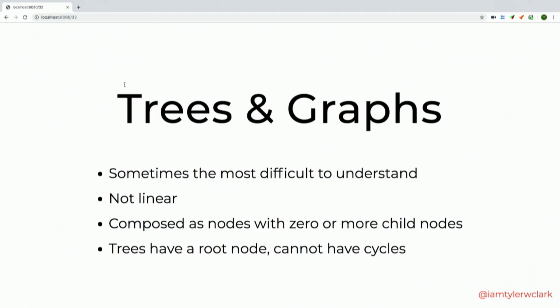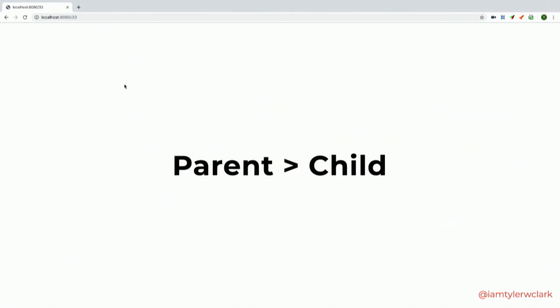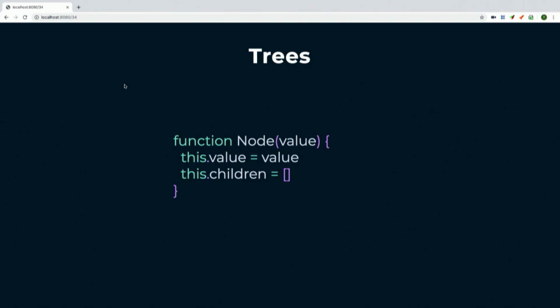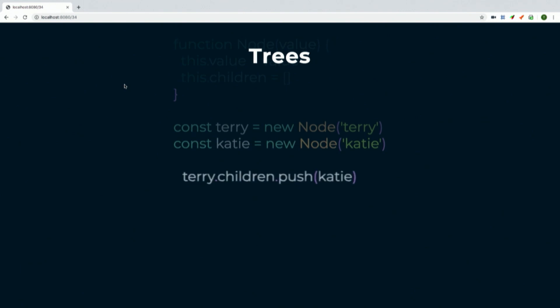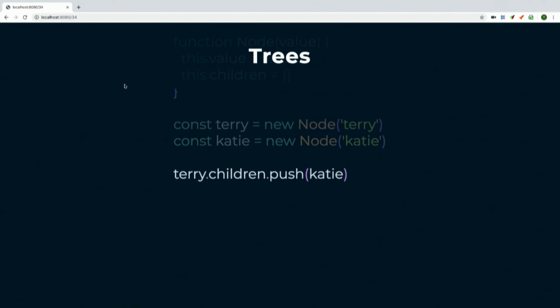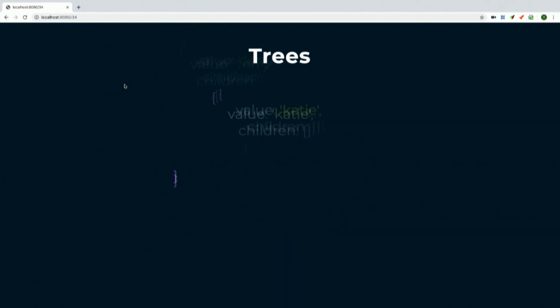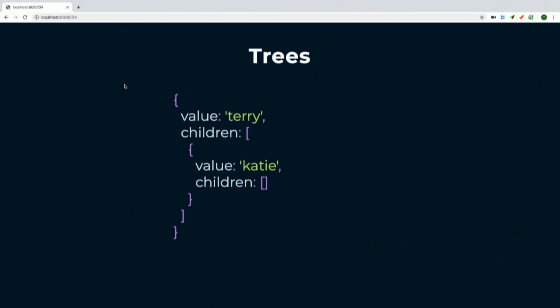Trees and graphs are sometimes difficult to understand because they don't have a linear one-at-a-time path — things are more nested and each node can have one or more children. Think of the parent-child relationship: we create a Node that has a value and a children array. Terry is the father and Katie is his daughter — we push Katie into Terry's children array. Unlike a linked list where 'next' is null or a single object, the children property is an array that can hold multiple items.